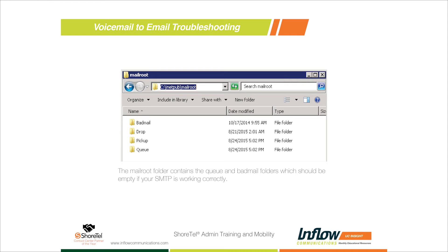The Queue folder is also useful for showing communication between servers. When you record a new auto attendant message, the server packages the wave file, drops it into the Queue folder, and sends it to the additional servers. Similarly, when setting up a new voicemail server - say bringing on a secondary server in Seattle - migrating users causes all their stored voicemails to be dropped into the Queue and sent one at a time to the new voicemail server.